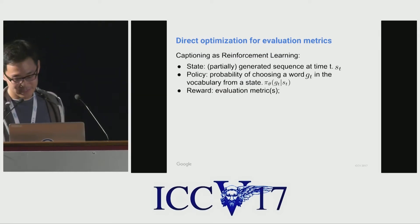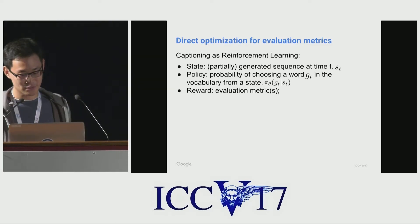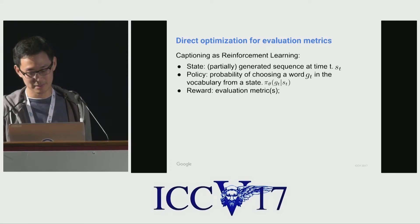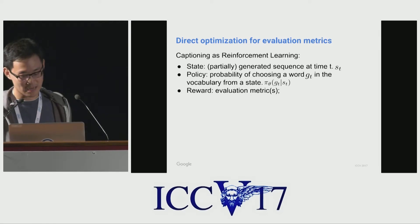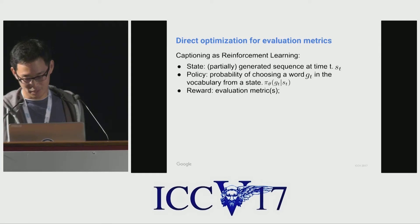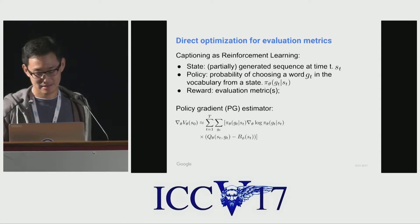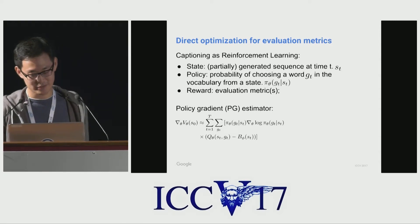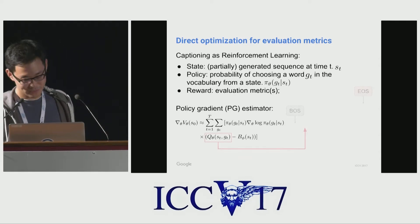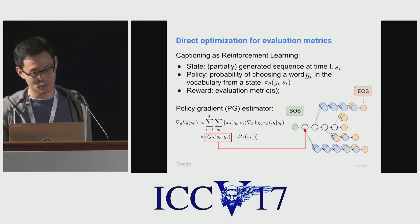Unfortunately, none of these metrics is differentiable, so we cannot directly backpropagate through them. However, we can instead frame captioning as a reinforcement learning problem, where states are partial sequences and the policy is the probability of picking a word from the vocabulary given the partial sequence. The policy gradient from RL literature gives us an unbiased but high-variance estimator. To reduce variance, we estimate the action value Q by averaging over K Monte Carlo rollouts, and we can batch all the rollouts in one forward pass quite efficiently.